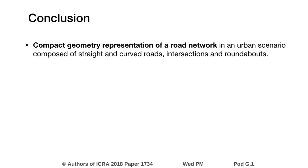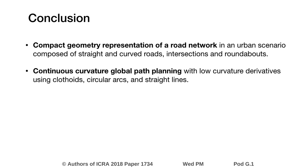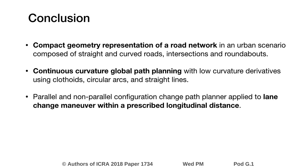In this paper, we present a clothoid-based compact geometry representation of an urban road network, continuous curvature global path planning considering intersections, roundabouts, and lane change maneuvers within a prescribed longitudinal distance.